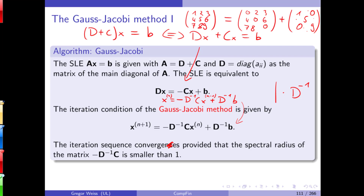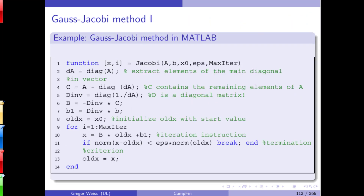You can prove that this iteration sequence converges in some cases. It converges when the spectral radius of the matrix (-D-inverse times C) is smaller than 1. That's the key condition — we don't need the proof, but we can check it in MATLAB.